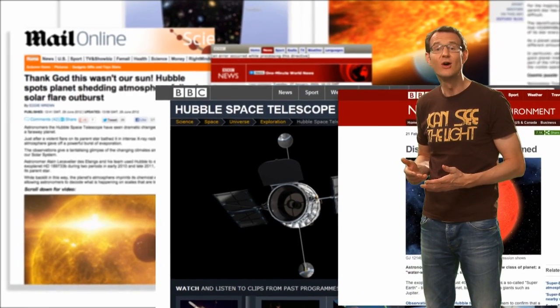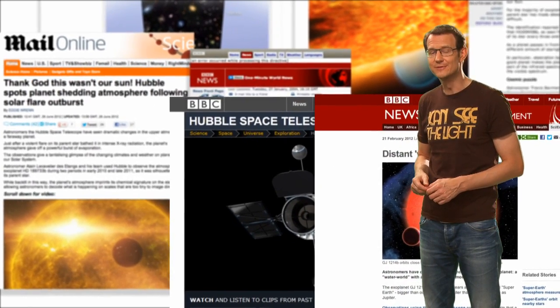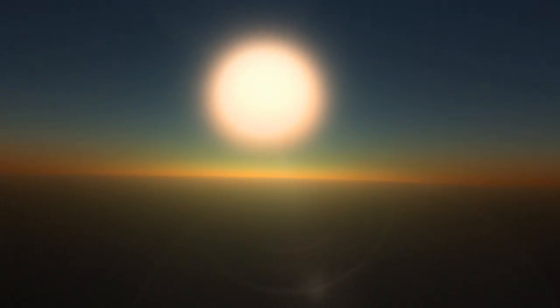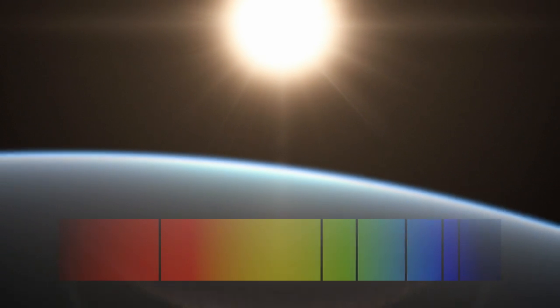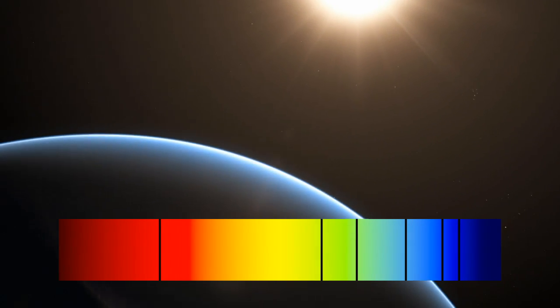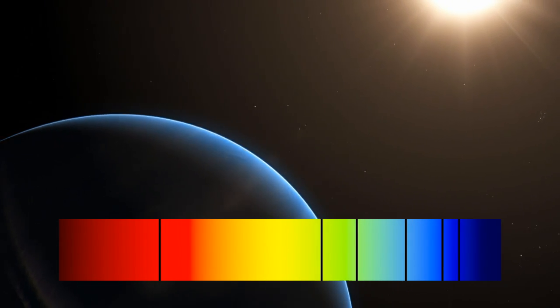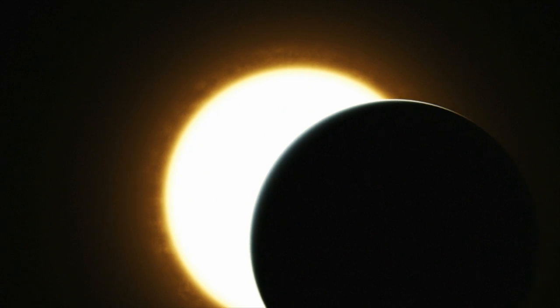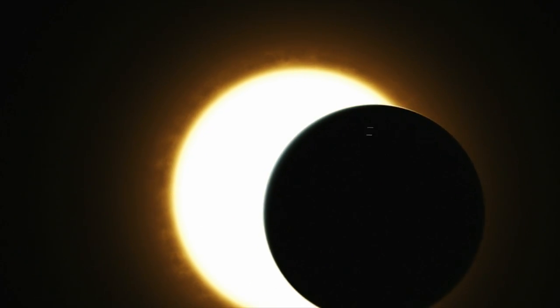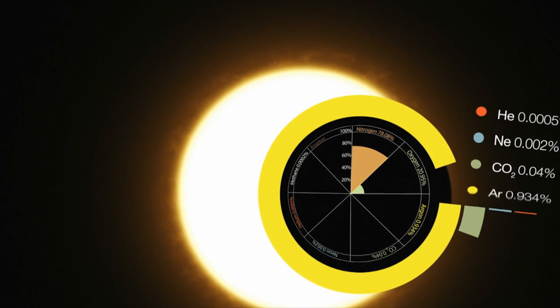It is these measurements that lie behind some of Hubble's most fascinating discoveries, such as the detection of different gases in the atmospheres of exoplanets. As a star's light passes through an exoplanet's atmosphere, the chemical signature of the atmosphere is imprinted on the light as dark lines in its spectrum. These lines tell scientists precisely what gases are present in the planet's atmosphere.